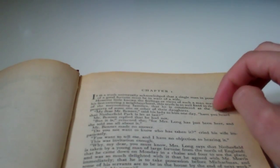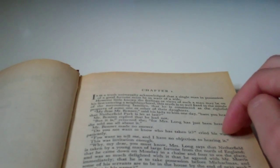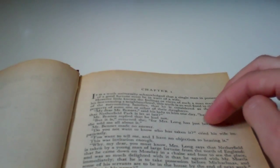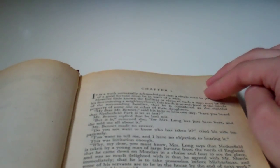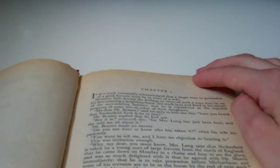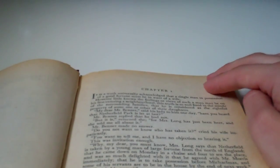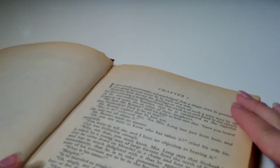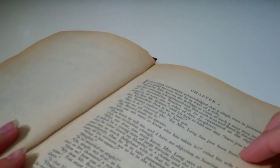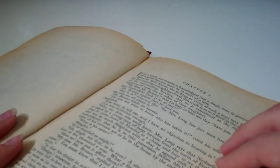Do you want to know who has taken it? cried his wife impatiently. You want to tell me, and I have no objection to hearing it. This was invitation enough. Why, my dear, you must know Mrs. Long says that Netherfield is taken by a young man of large fortune from the north of England, and that he came down on Monday in his chaise and four to see the place, and was so much delighted with it that he agreed with Mr. Morris immediately, that he is to take possession before Michaelmas, and some of his servants are to be in the house by the end of the week.